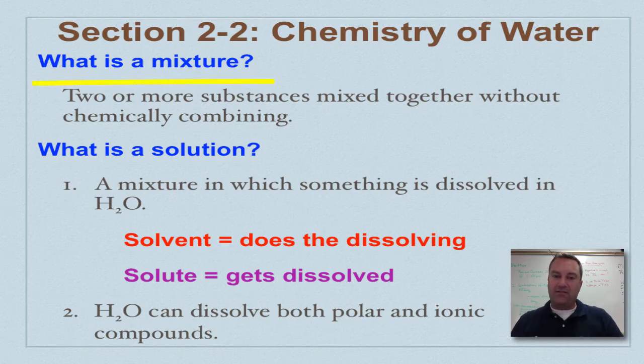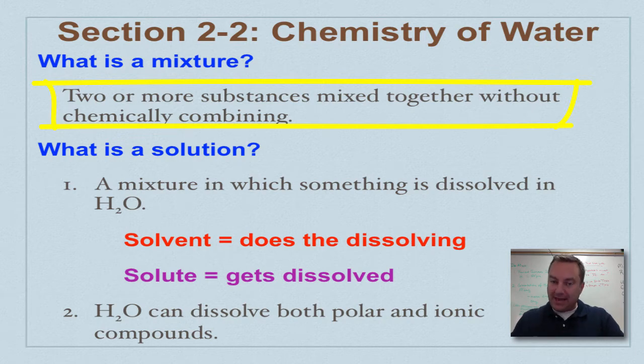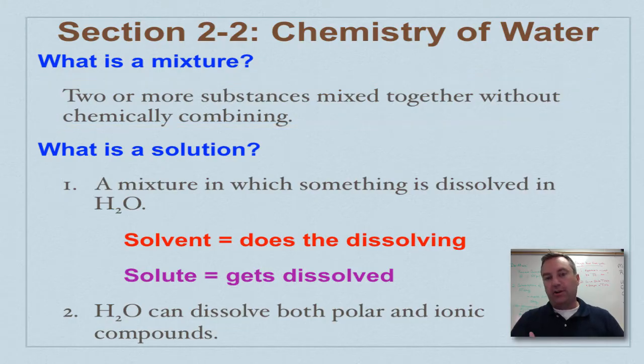we need to have a definition of it. A mixture is basically two or more substances mixed together or put together without chemically combining, because if they were going to chemically combine, we'd just call them a compound. So when we talk about a mixture, we can actually separate the components if we desire.